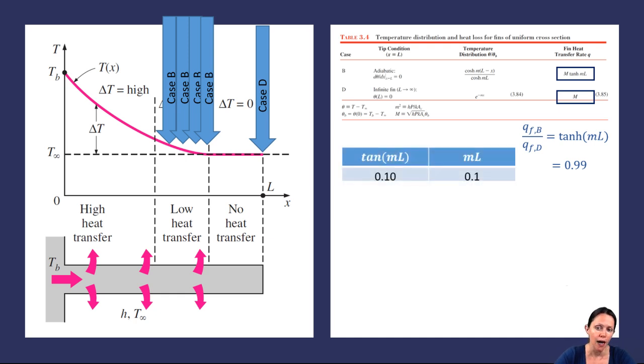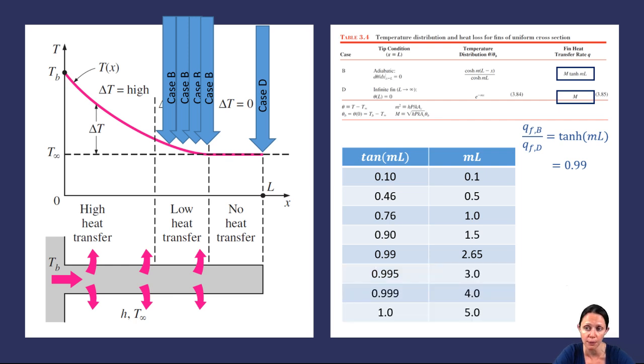So let's look at what values of hyperbolic tangent of ML correspond to ML. If the heat transfer rate of a fin is only 10% that of an infinitely long fin, ML would have to be 0.1 where M is a fin parameter. To obtain a heat transfer rate of 46% that of an infinite fin, ML needs to be 0.5. And we can keep plugging in numbers until we obtain a heat transfer rate of 99% that of an infinite fin. And we see that our ML needs to be 2.65.